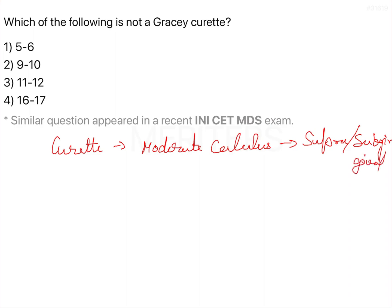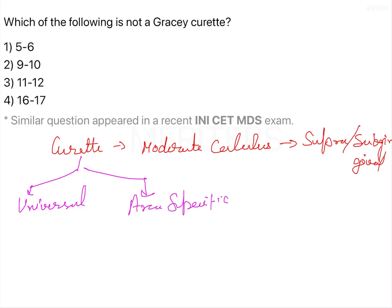There are two types of curettes: one is universal, which can be used all over the oral cavity, and another is area-specific. Gracey curettes are basically the area-specific type.